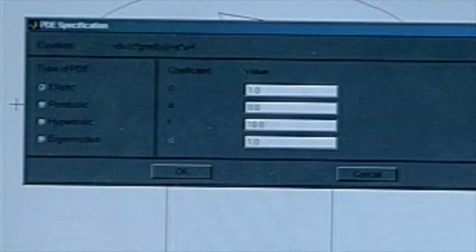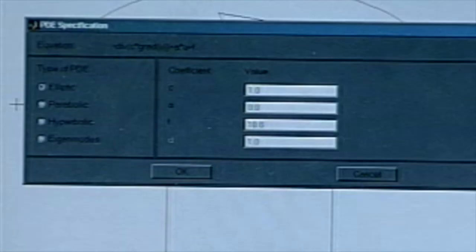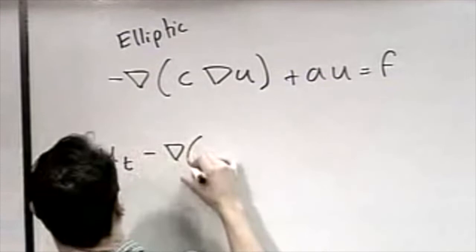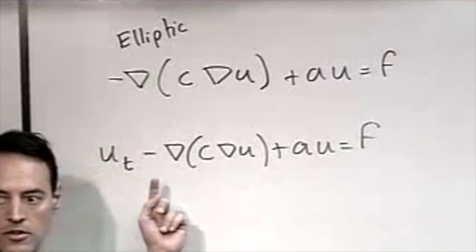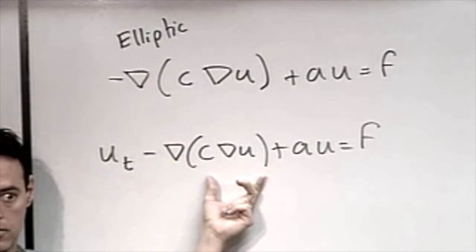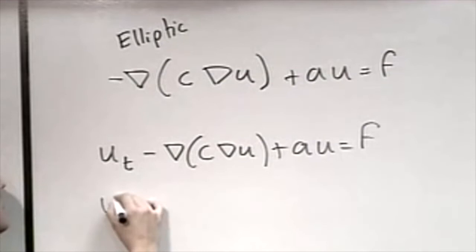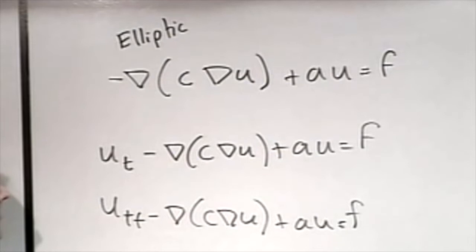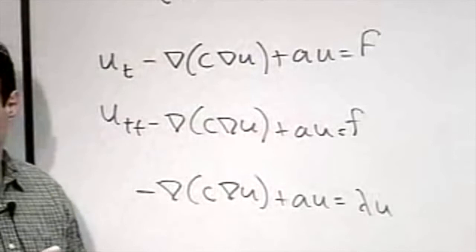Another type of problem: parabolic. It's the same equation as the elliptic but now you add a d_U/d_t term on the left side — so now it's a heat equation, dU/dt plus the elliptic operator equals stuff. Now you're watching how this thing evolves in time. Hyperbolic problem adds a second time derivative. And then finally the eigenvalue problem. So those are the four general types of problems you can solve.